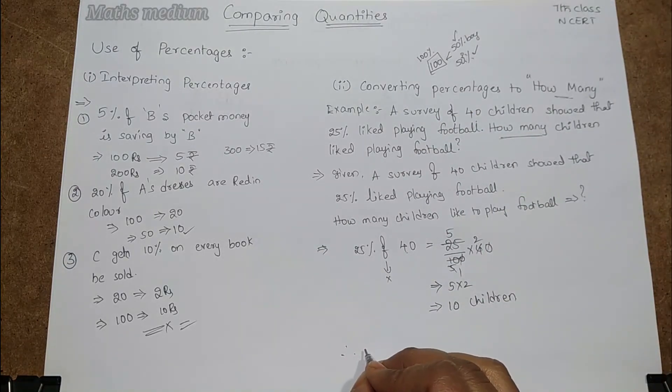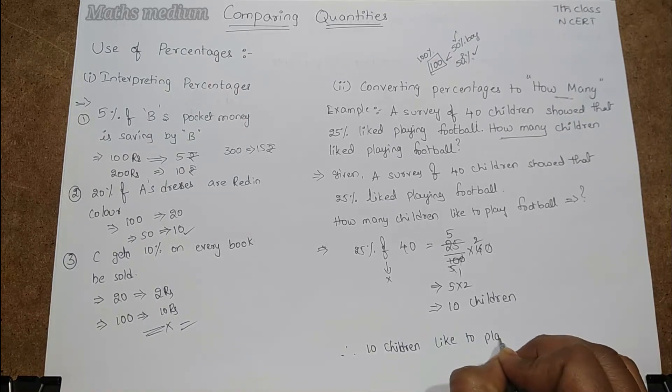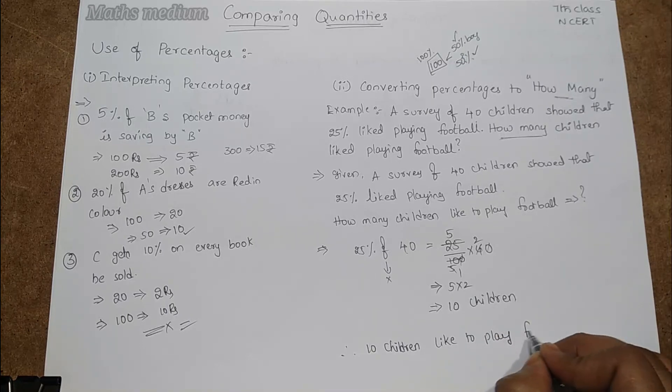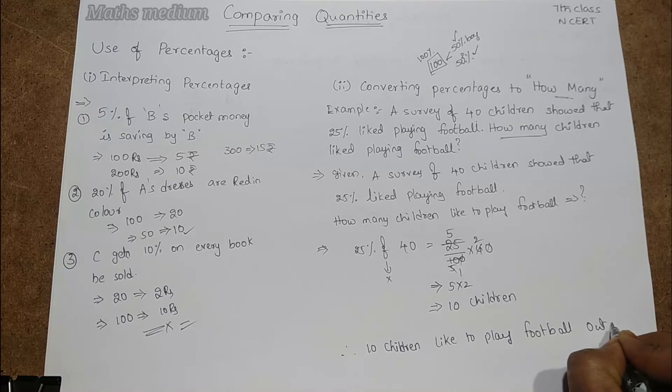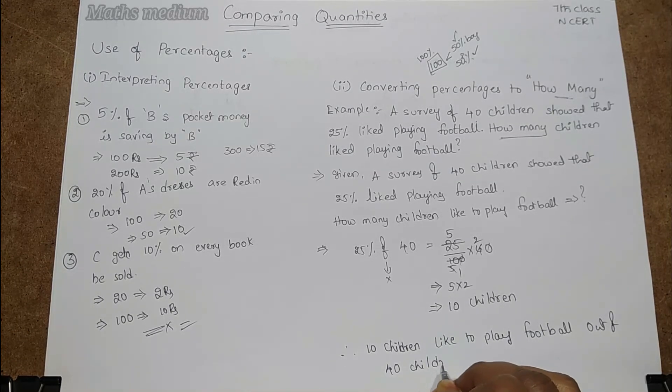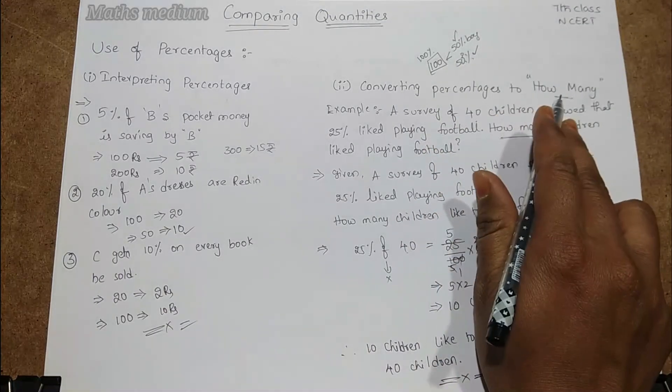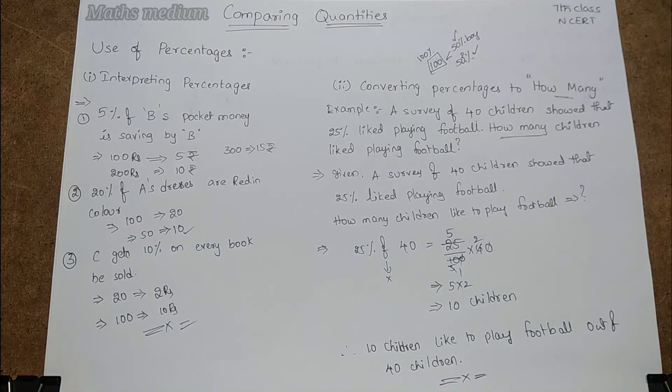Therefore, 10 children like to play football out of 40 children. This is about how to convert percentages to how many. I hope you understand about this session. If you have any doubts, comment on the comment box. Click like button and share my videos and subscribe my channel. Thank you.